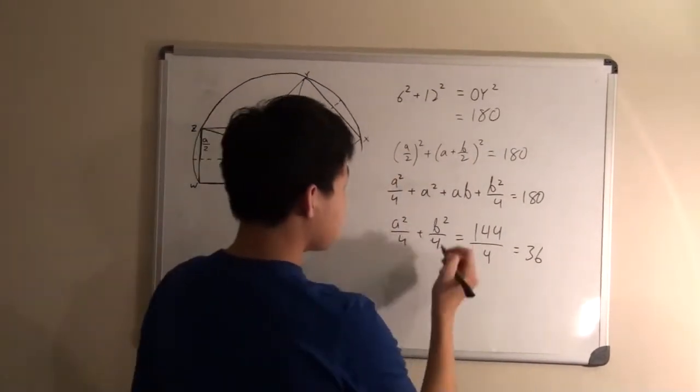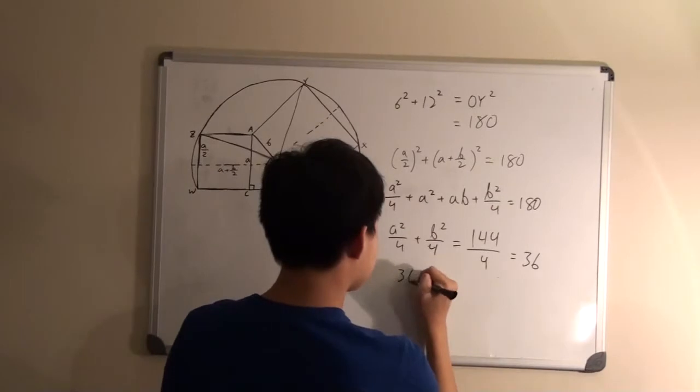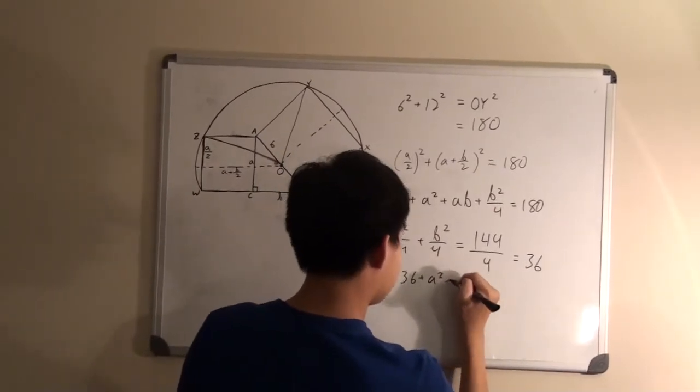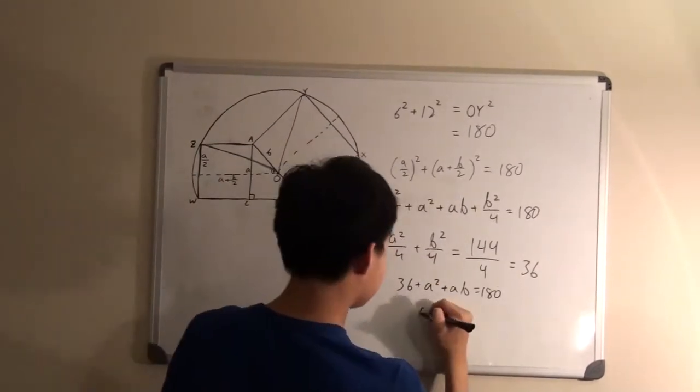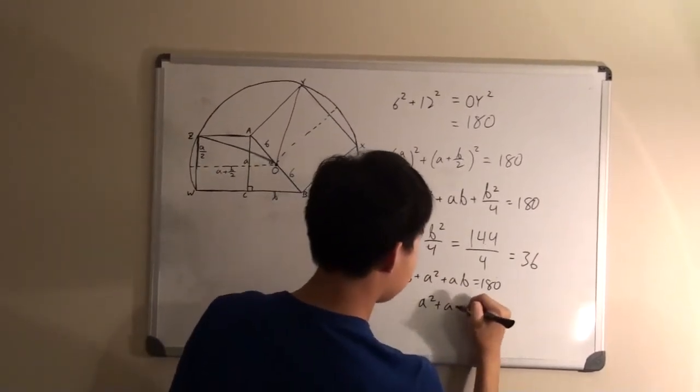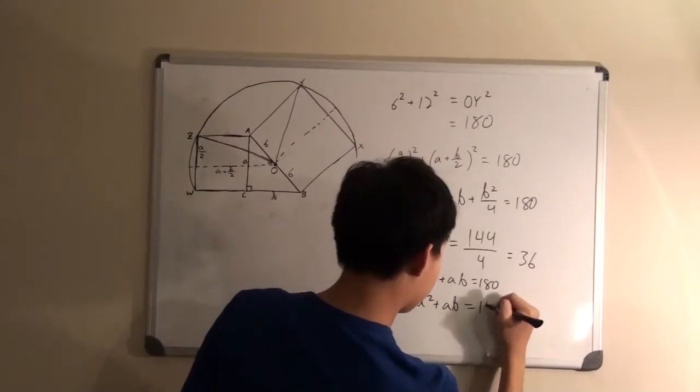So if we plug this in, we get 36 plus A squared plus AB is equal to 180. And then subtracting 36 from both sides, we get A squared plus AB is equal to 144.